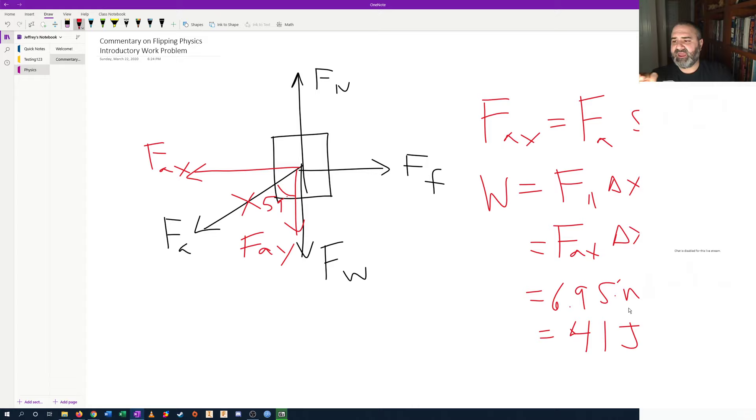A force pushing an object in the direction it's moving adds energy, tends to make it increase in kinetic energy. A force opposite the direction of motion tends to make it decrease in kinetic energy.